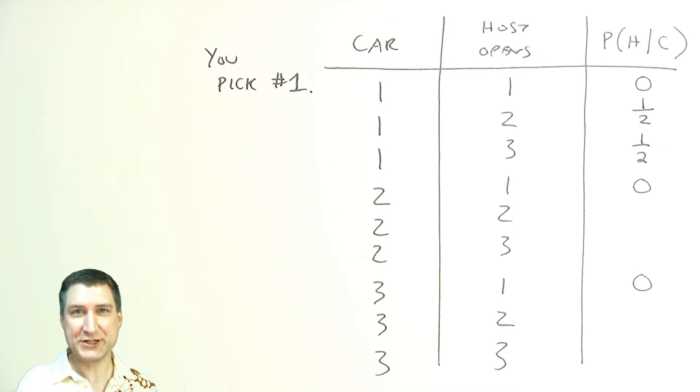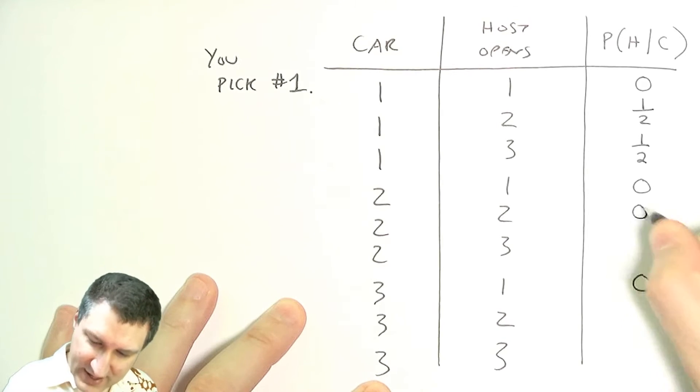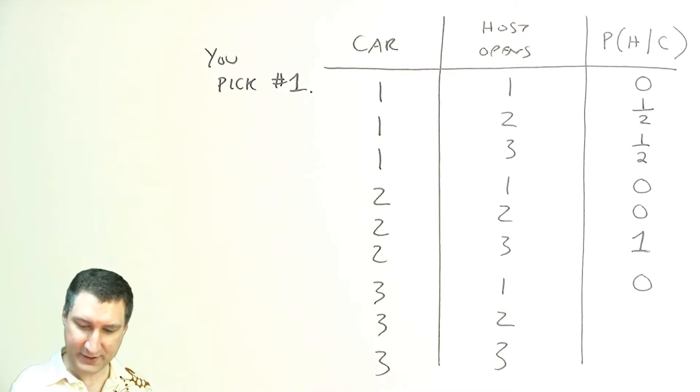Now you pick number one. If the car is actually behind number two, then clearly the host can't open that door to show you the car. He can only open number three to show you a goat. So he's not going to open number two. He's only going to open number three.